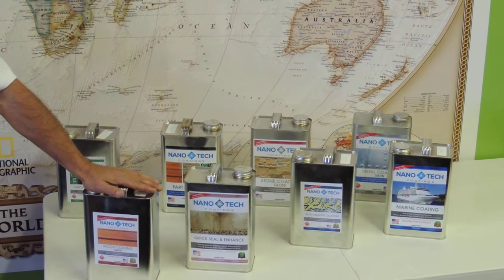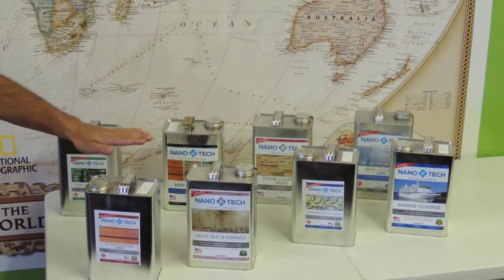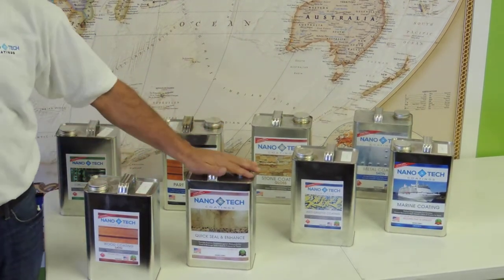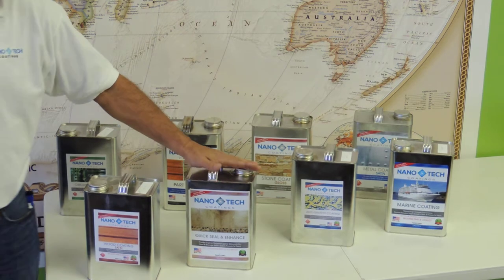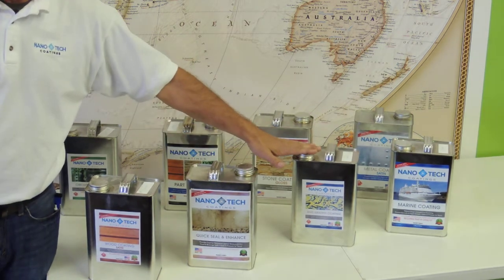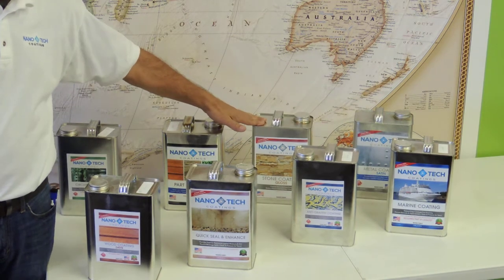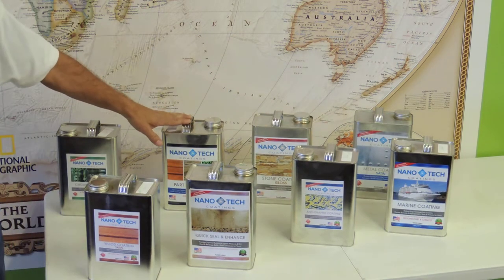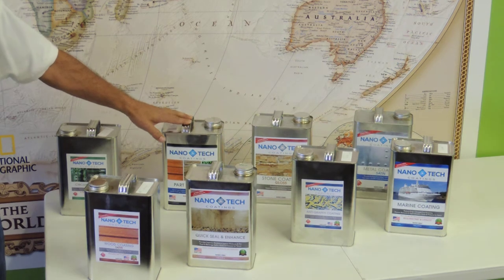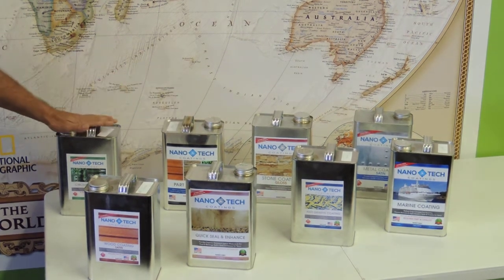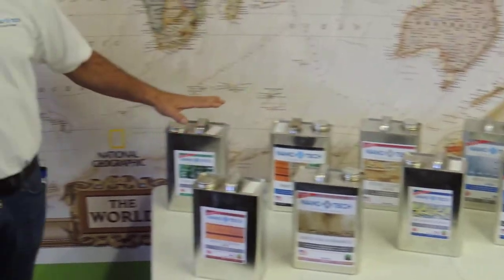What we have here is nanotechnology products for wood, quick seal and enhance for concrete products and masonry, anti-graffiti which is very popular, marine coating, metal coating, stone coating. Here's our catalyst that works with a few of the more powerful sealers and coating, and also circuit coating. This is just a few of what we have, we have more than this.